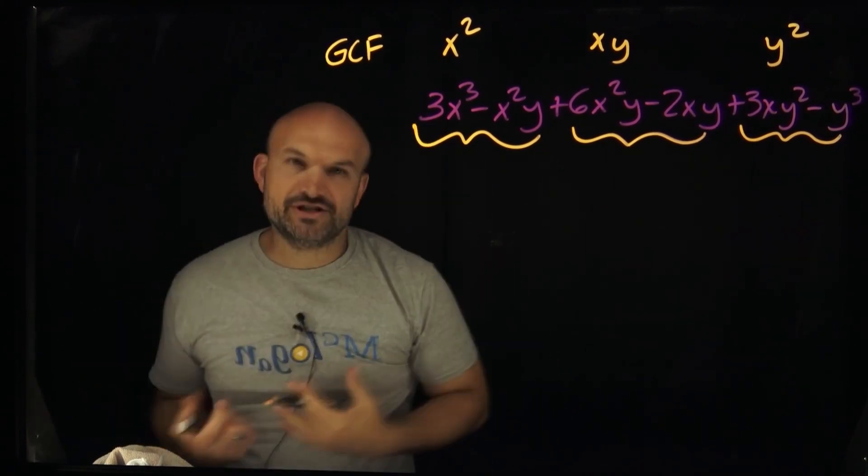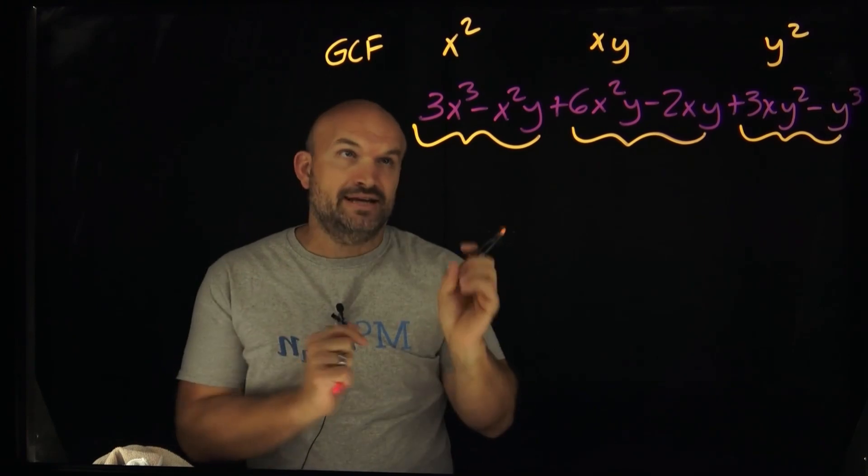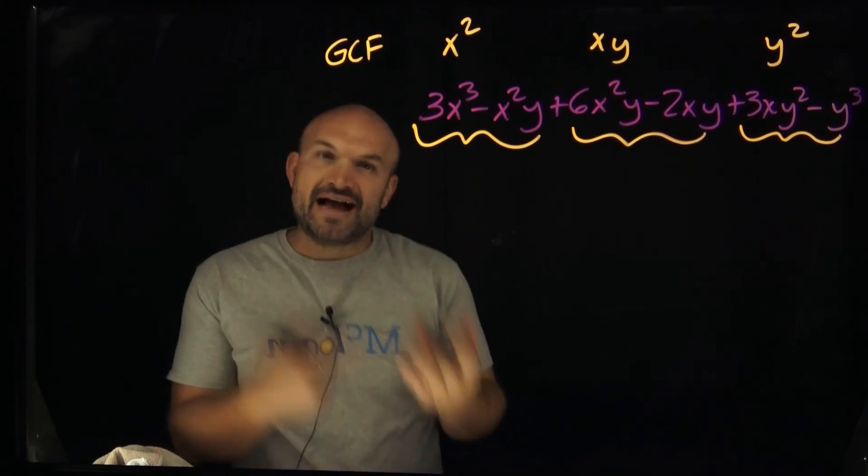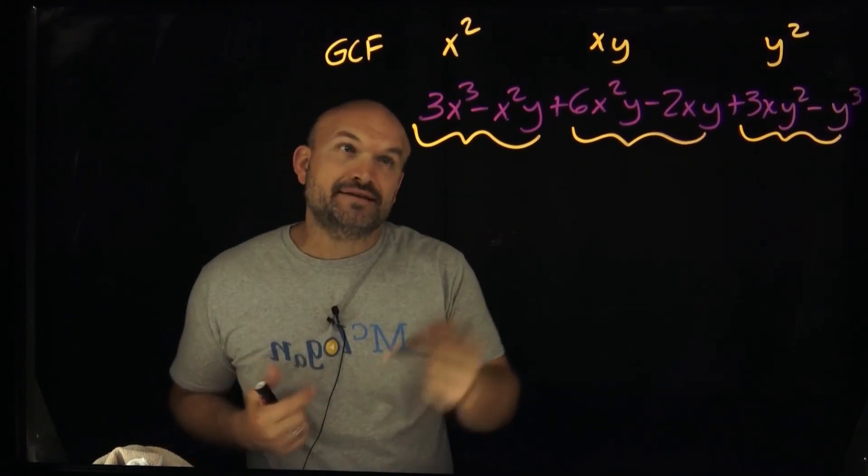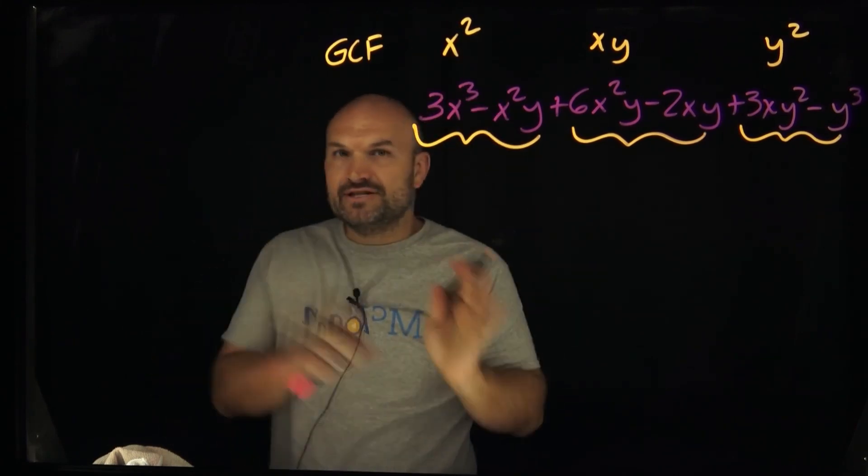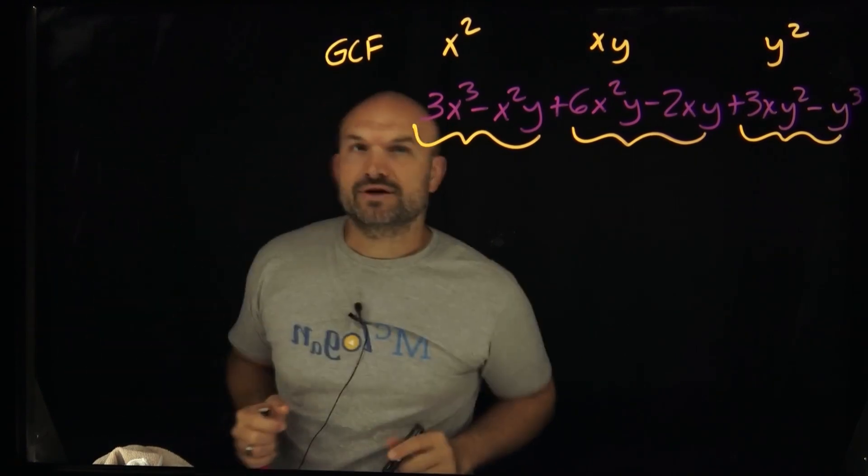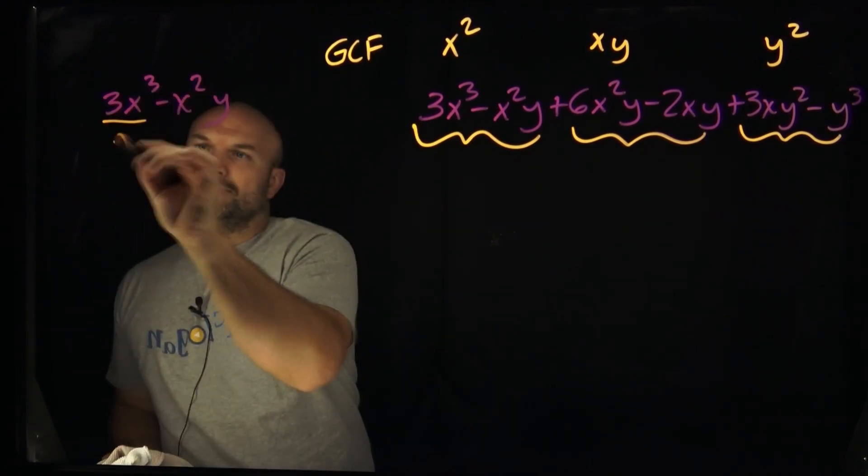Now remember, when you are factoring out by the GCF, basically what you're doing, you are dividing out the terms that they have in common. So when I say like factor the GCF out, what I basically mean is take those two terms and divide it by your greatest common factor. So let's just go and work this one kind of slowly. And then we'll see like how exactly it works.